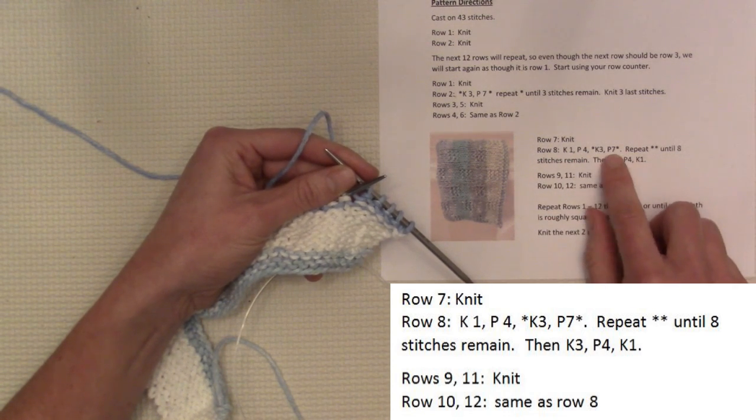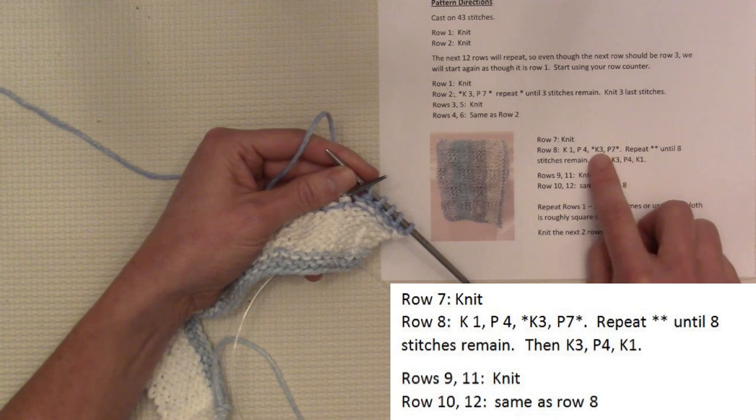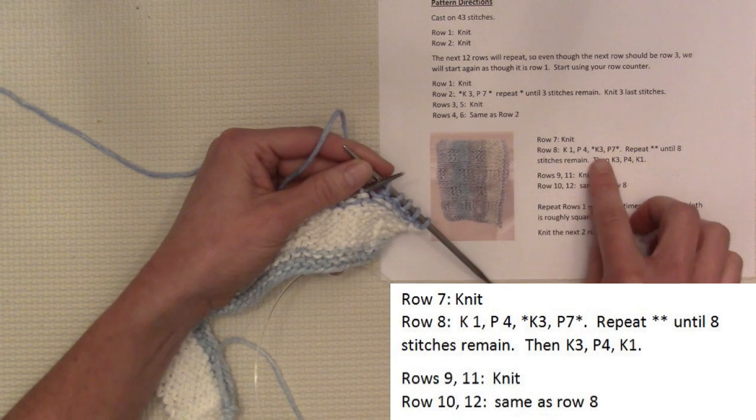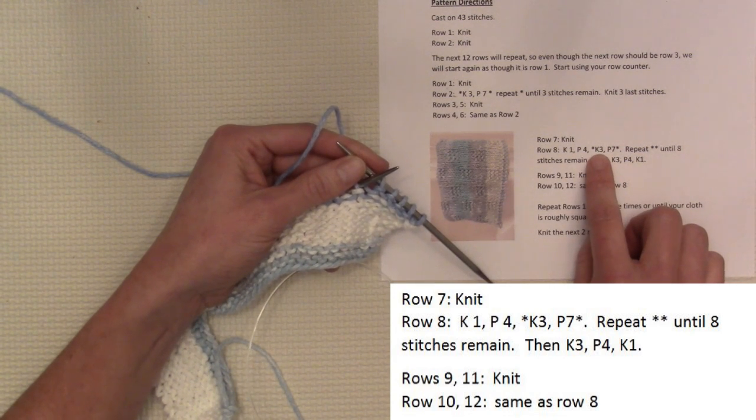Now you've got the asterisks, and you're going to repeat that stuff in the asterisks until 8 stitches remain on the needle. So you're going to repeat knit 3, purl 7. I want you to go ahead and do that.